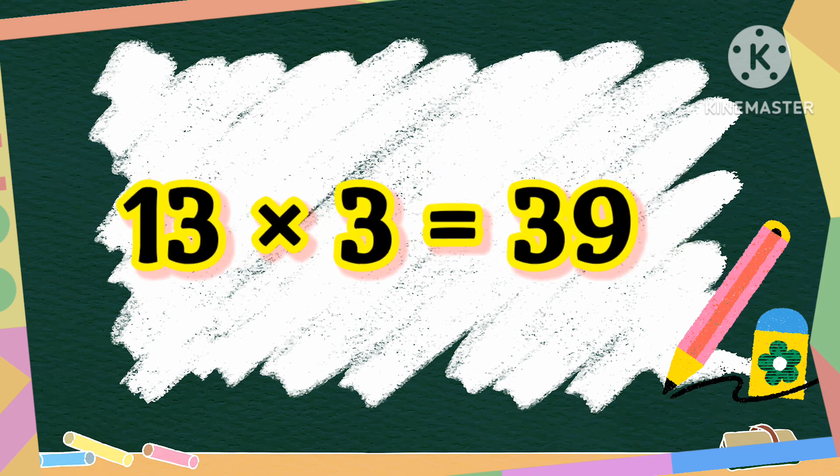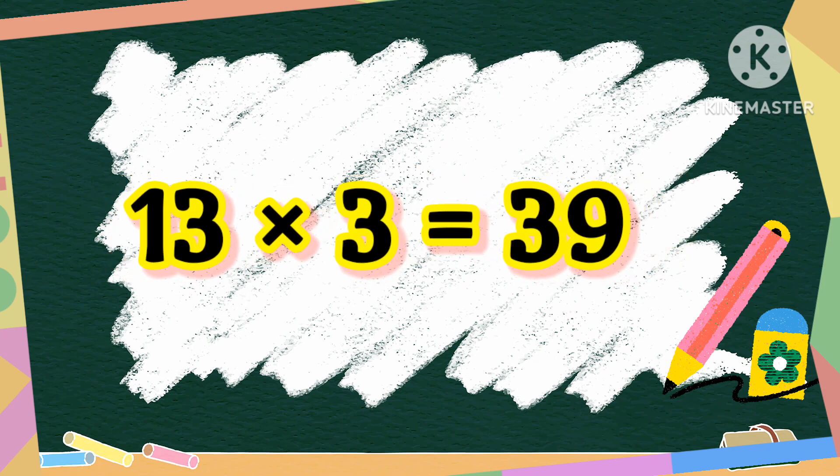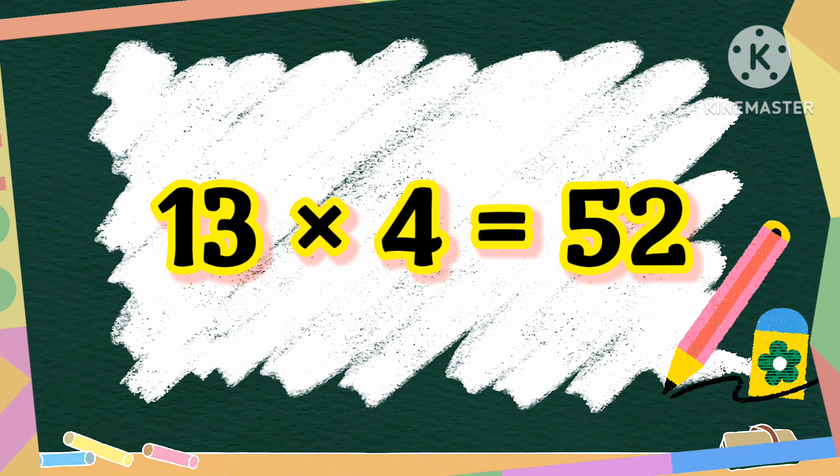Let's read. Now, 13 threes are 39. 13 threes are 39. 13 fours are 52. 13 fours are 52.